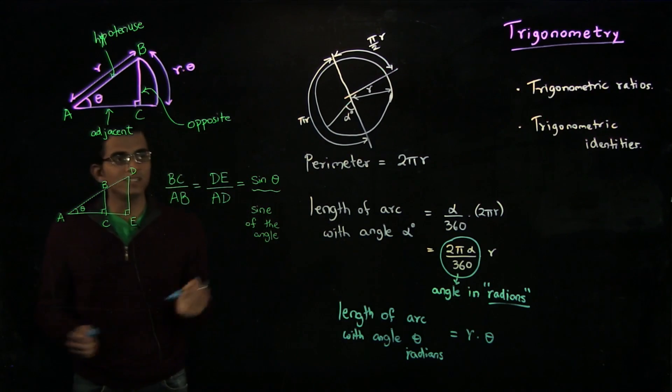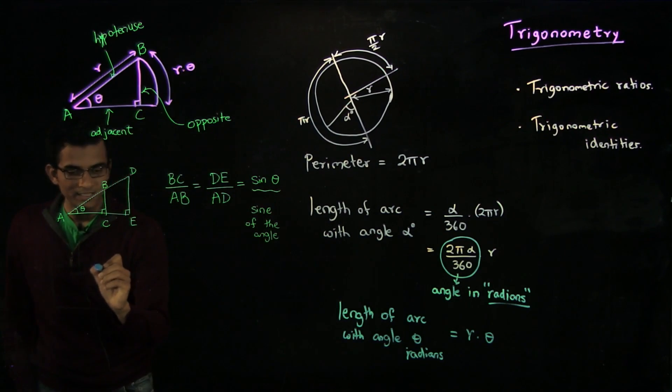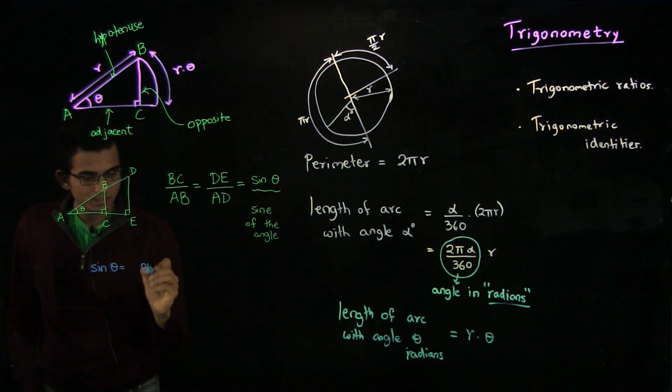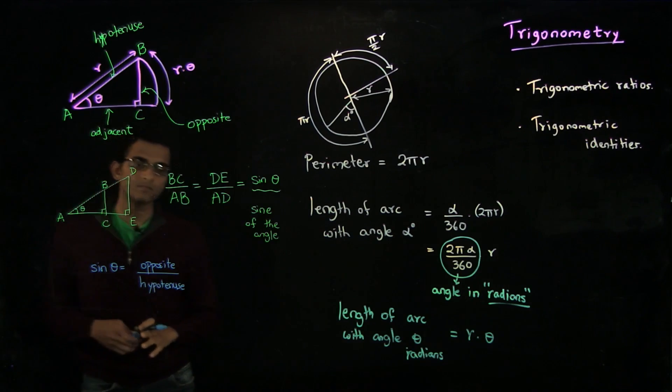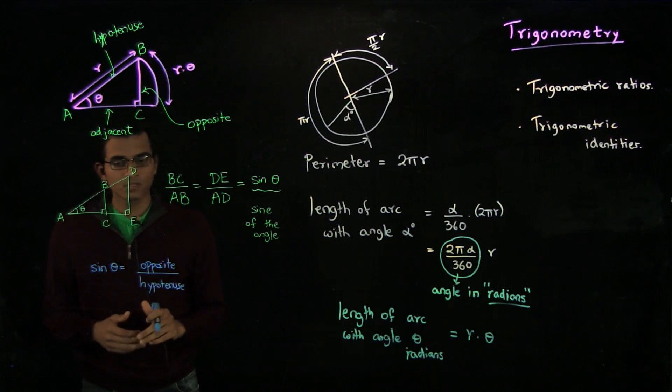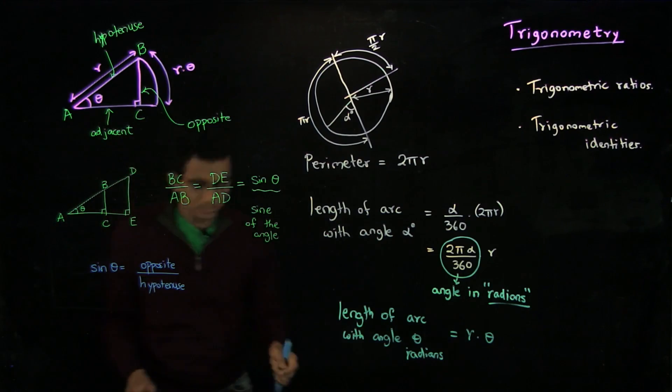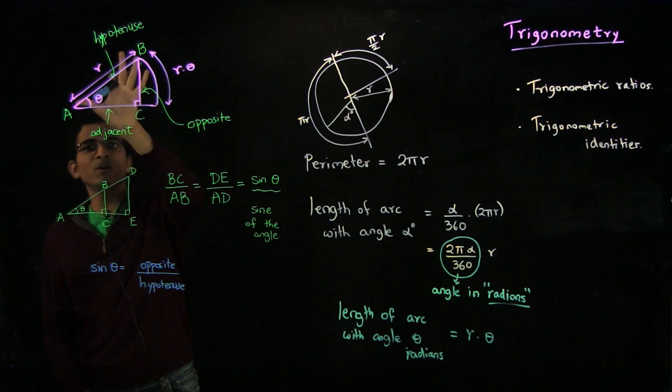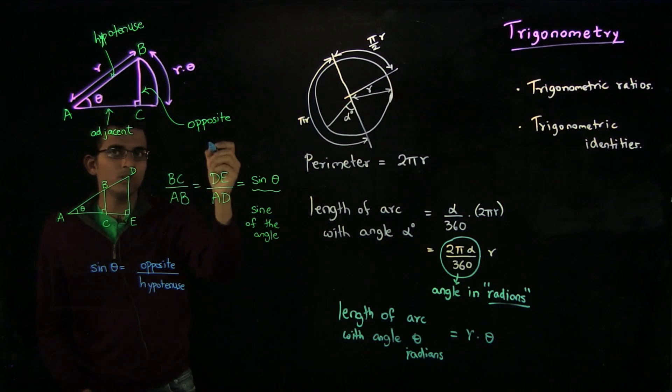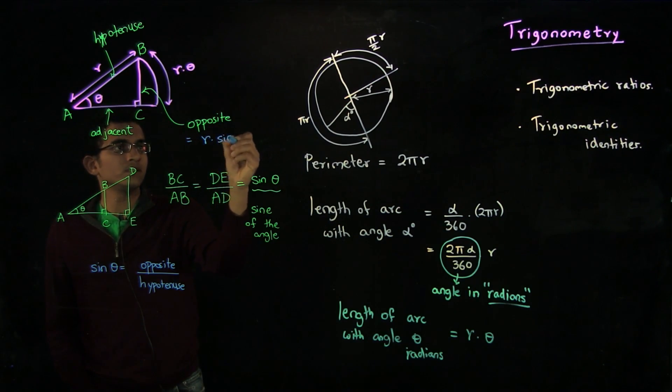We define this quantity. This quantity is defined as the sine of the angle. To remember it more easily, let us call sine theta as the opposite side over hypotenuse. For example, now you would see that in this thing, if the hypotenuse is r, the length of the opposite side is now r times sine theta.